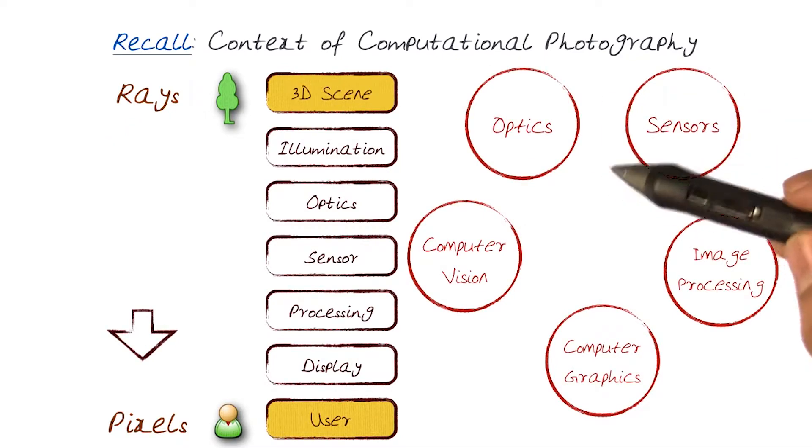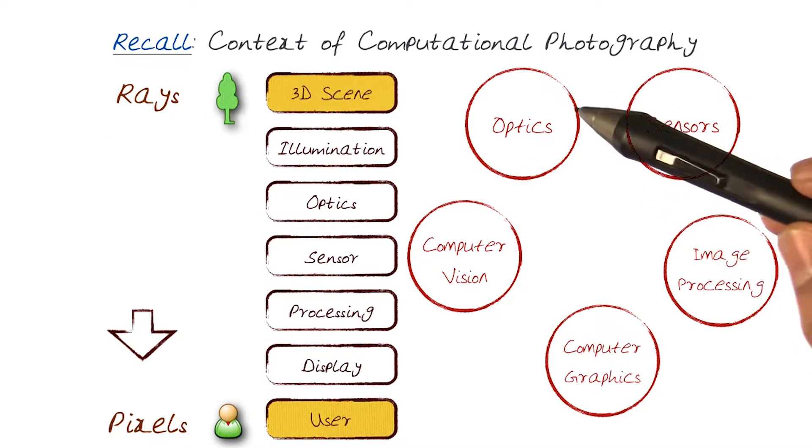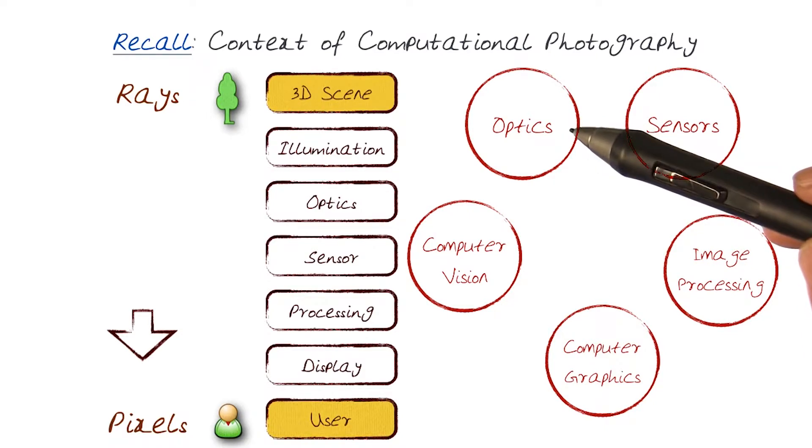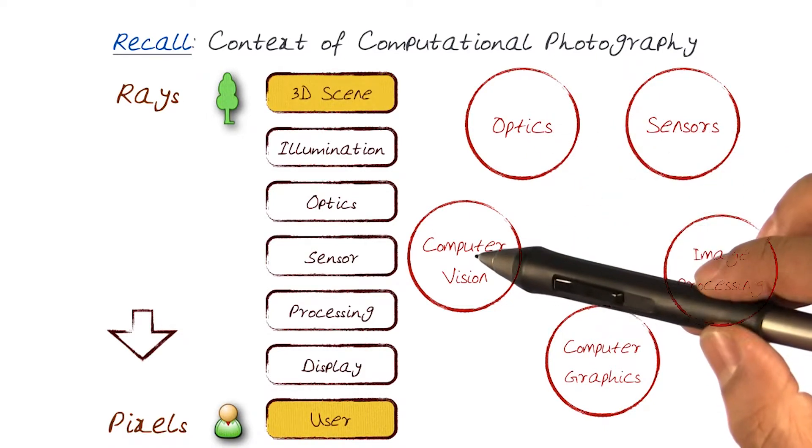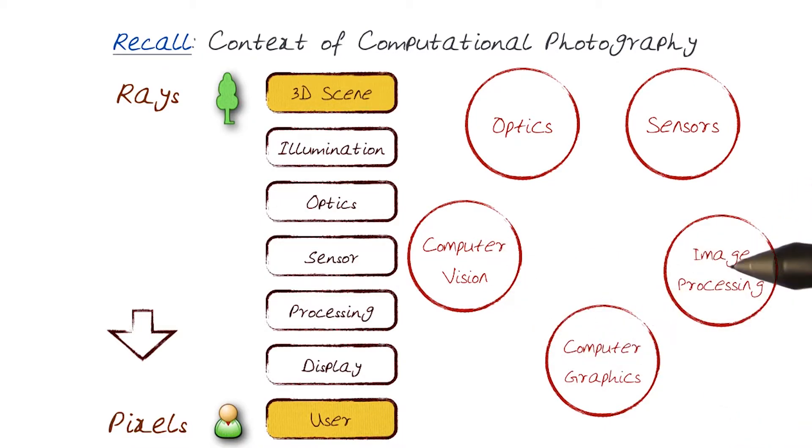One thing I want to emphasize is that in the study of computational photography, we rely on various types of disciplines ranging from optics, sensors, computer vision, computer graphics, and image processing.